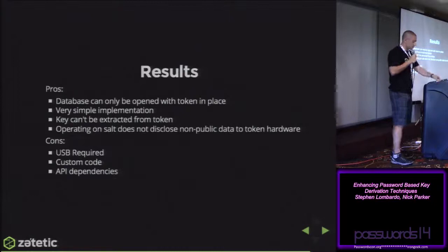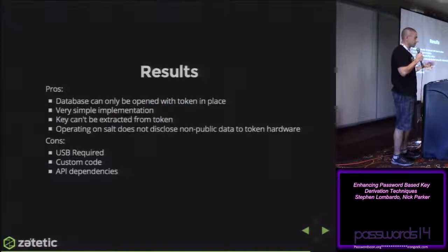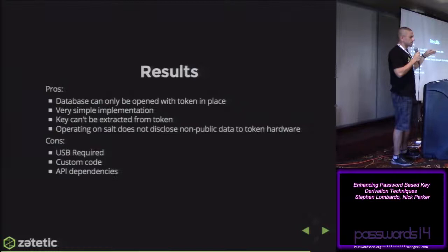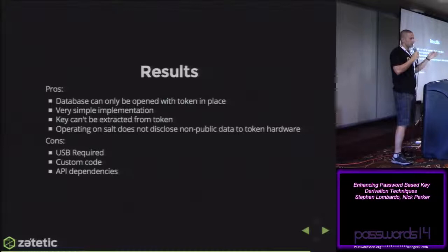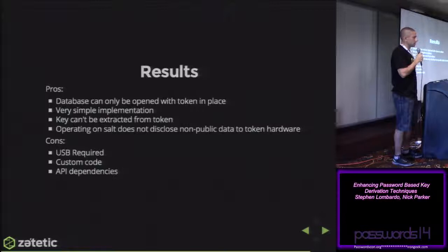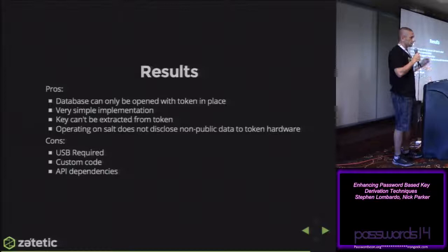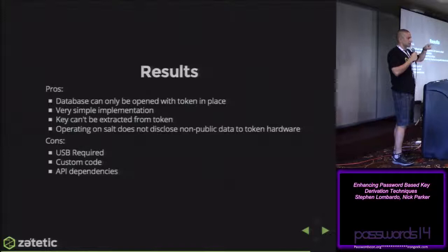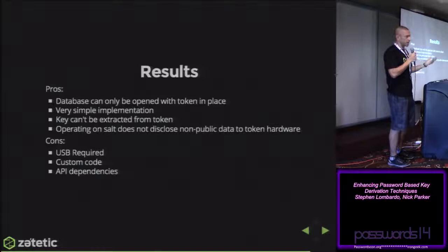One easy way to verify the token — and we did this during development — is that when you flash the token you know what the key was at that point, so you can execute an HMAC operation with a known good library like OpenSSL and verify you got the same value out. We actually did that during development and it's in the code — there's a link we'll publish to GitHub. Both devices have an API used to flash them, and at that point you can take whatever random data you're going to write, flash it to the device, test that you get a signature back, and validate it with a third-party implementation like OpenSSL or CommonCrypto.